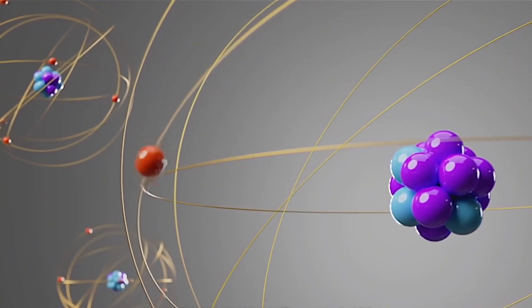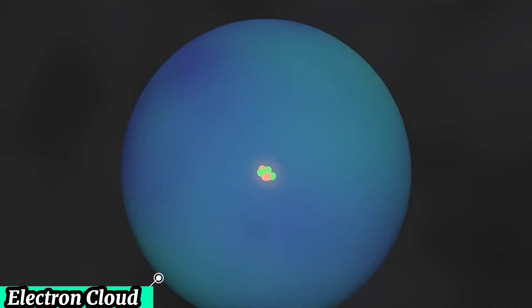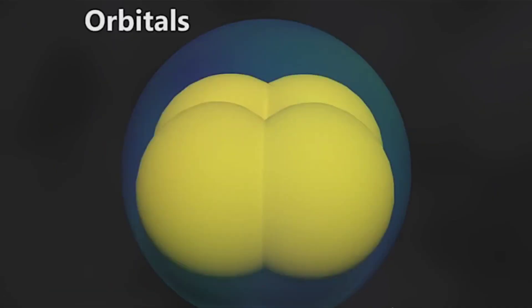The difference is that we cannot predict the exact position of an electron at a certain moment. We can only describe the probability of an electron appearing in a certain area in the form of an electron cloud.